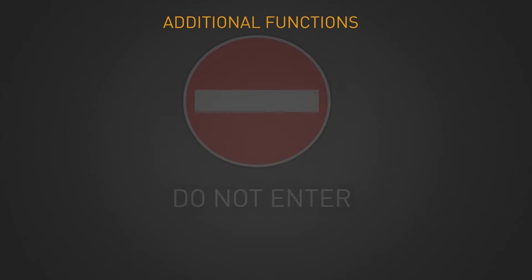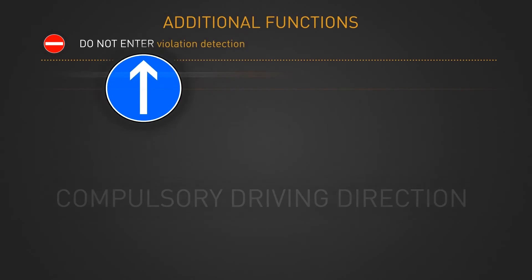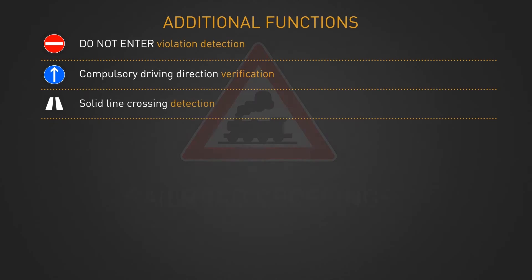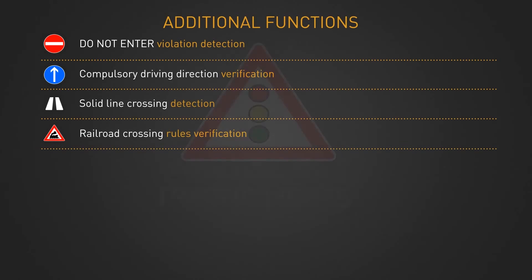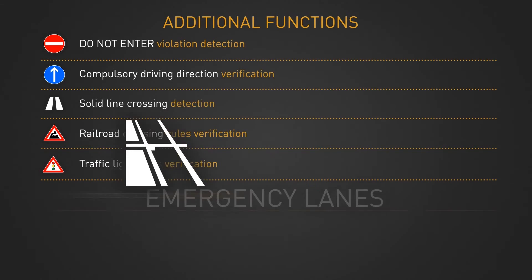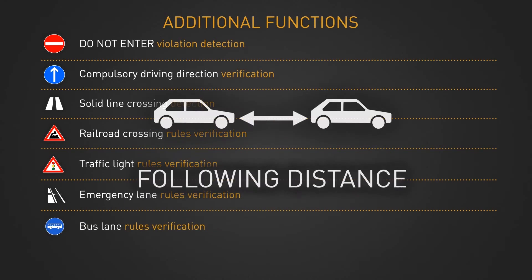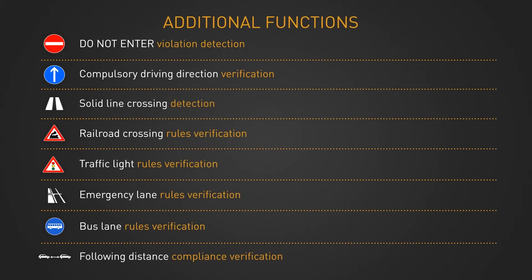Traffic Spot is able to detect do not enter violations, moving direction violations, solid line crossings, railroad crossing violations, traffic light violations, emergency lane and bus lane violations. It can also measure following distances between vehicles.